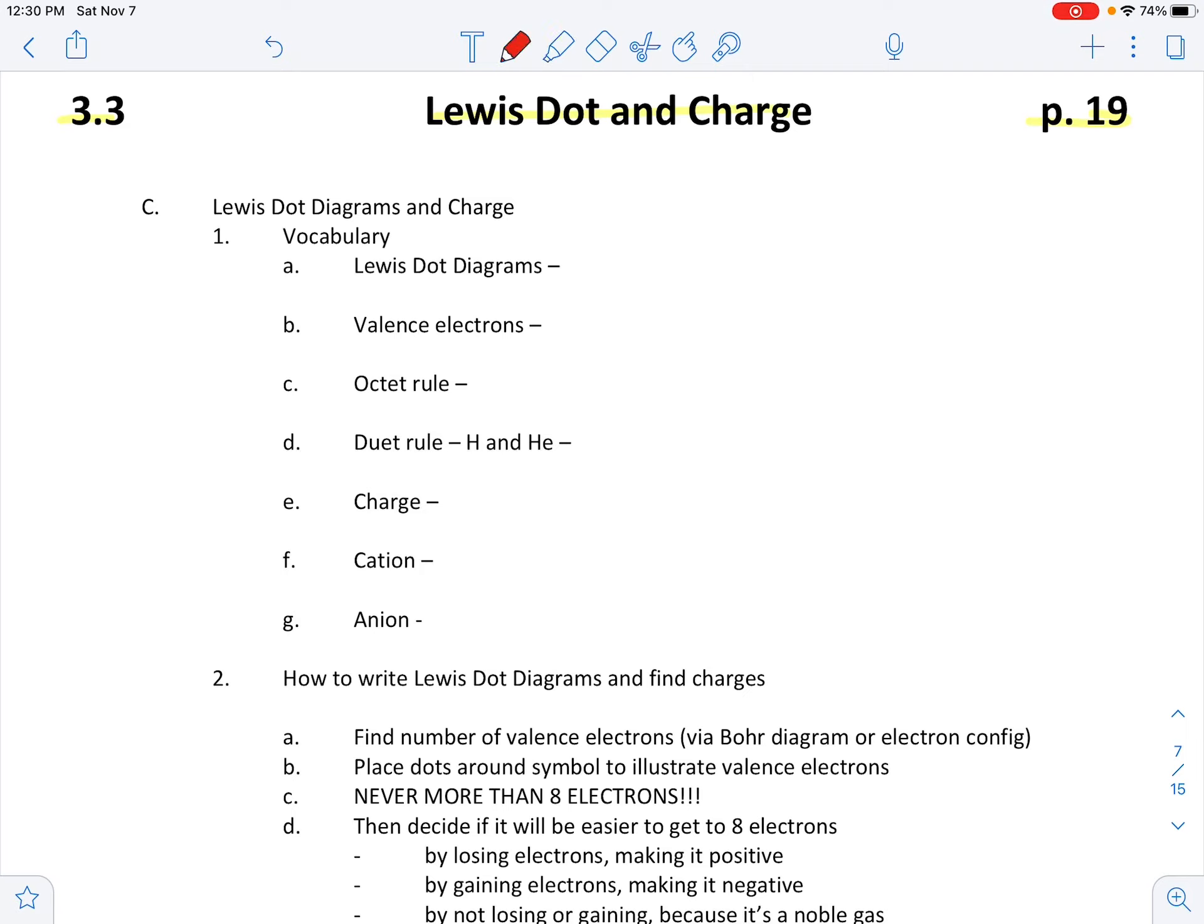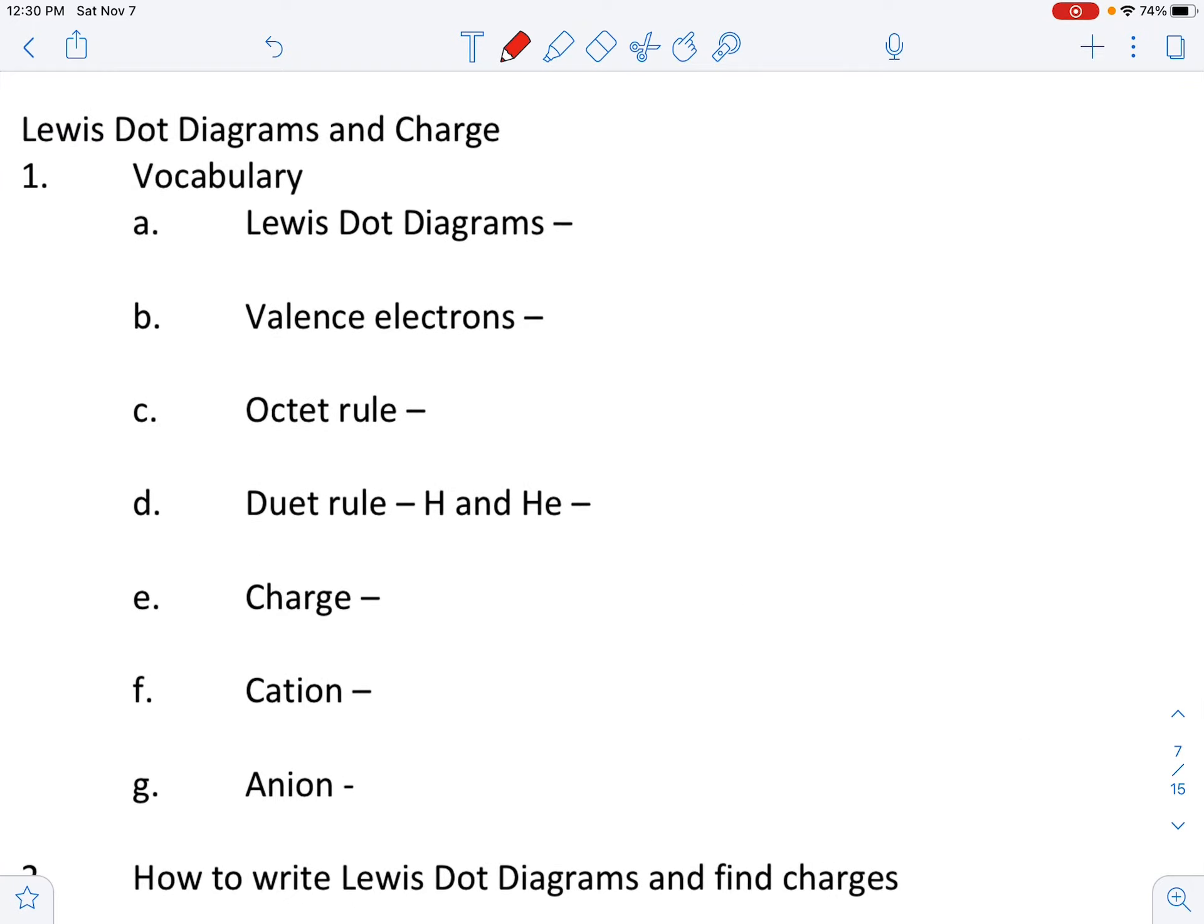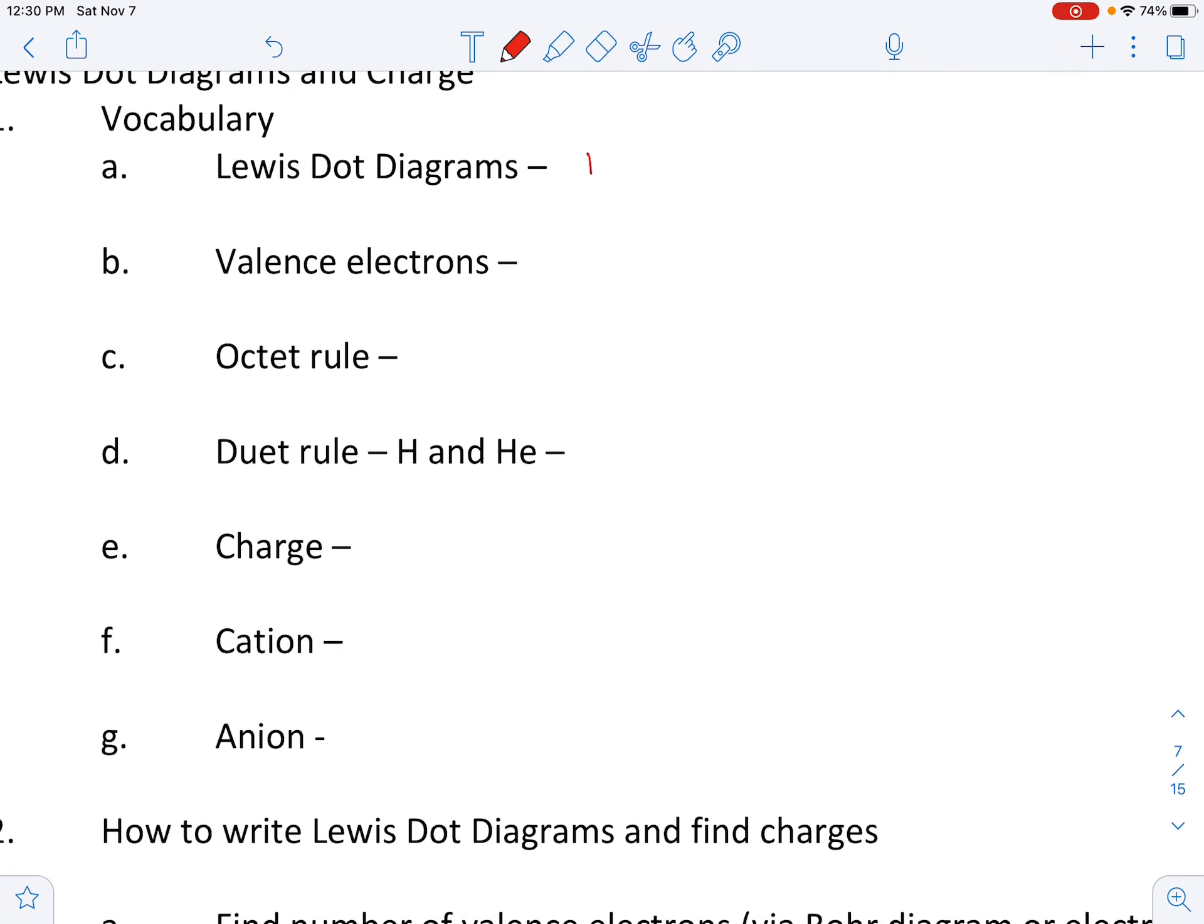We're going to hit some vocab right away. So we've got Lewis dot diagrams. And so this is very simple. The dots represent valence electrons. And remember our valence electrons are those electrons in the outer energy level. So they're the ones that are involved in bonding, which is what we're most interested with right now. These are our outer energy electrons. They are involved in bonding.